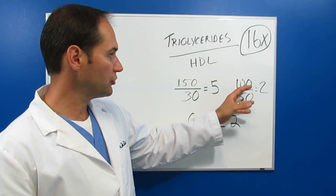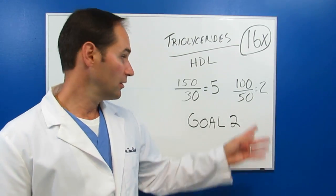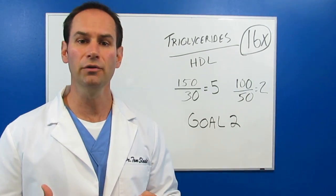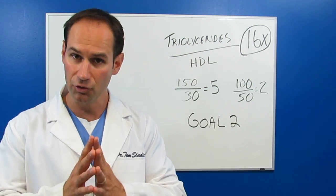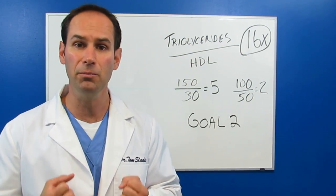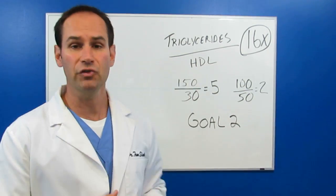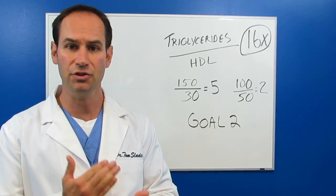Or you have a triglycerides of 100 and an HDL of 50 equals 2. So you want a goal of 2. This is a much better indicator. If you're looking for a number and if you're worried about heart disease and complications from that, use this ratio, triglycerides over HDL.